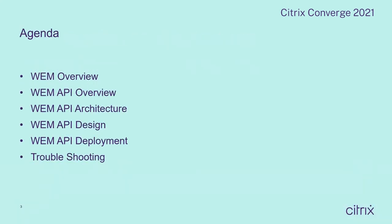This is the agenda for today's session. It will include a WAM overview providing a brief introduction for WAM products, and an overview introduction for WAM public APIs. Then we will step into more detail: WAM public API architecture, how we build up the WAM API framework, how to design WAM public APIs such as design model and API authorization, how to deploy WAM APIs, and finally how to do troubleshooting for WAM public APIs.